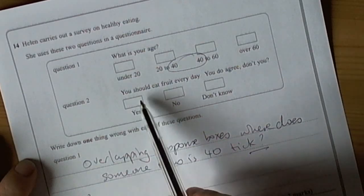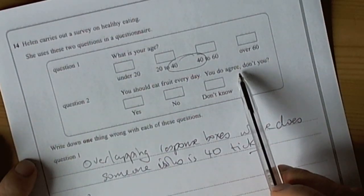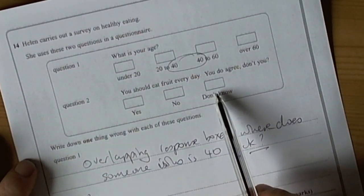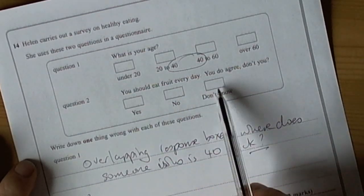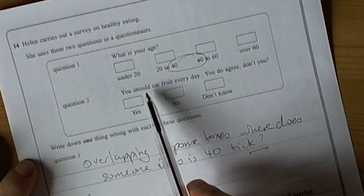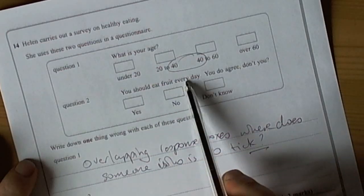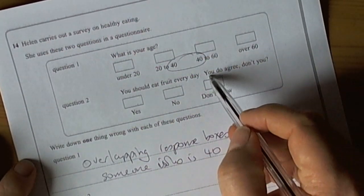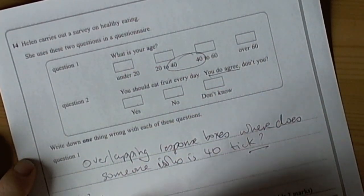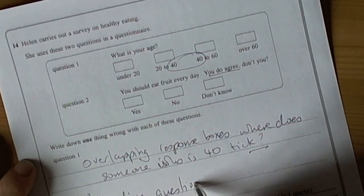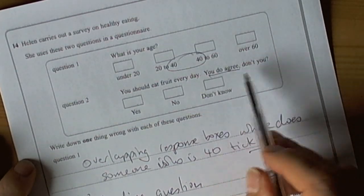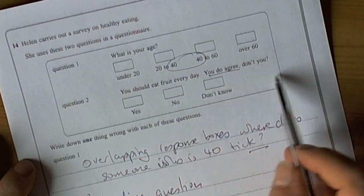Question two, should you eat fruit every day? Do you agree? You do agree, don't you? Yes, no, don't know. So, the responses themselves allow people to say that. But it's a biased question because it's leading you because you do agree. So, this is what we call a leading question which you should avoid. It's kind of suggesting to you that you should agree with eating fruit every day.